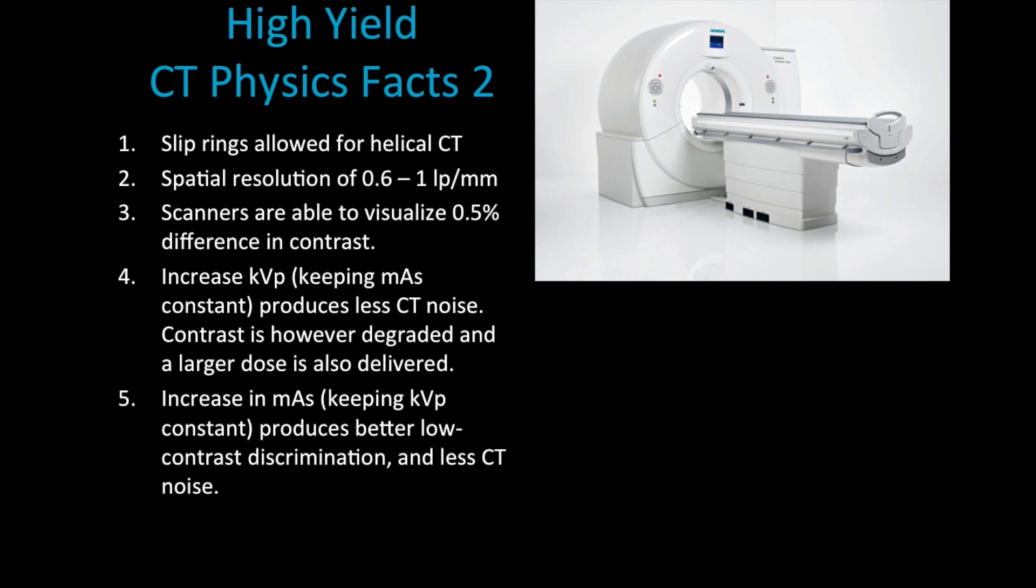What this means is that maybe the contrast is already there in the image, but if I have too much noise I won't be able to see it. By the same token, if I decrease the noise I improve my low contrast discrimination. So it's low contrast and it's there, but by removing the noise I'm better able to discriminate between two objects with low contrast.